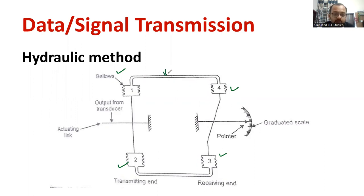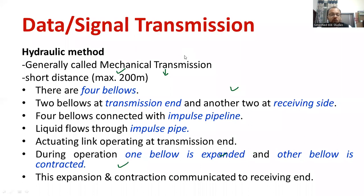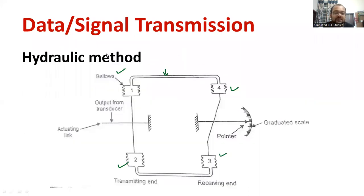Moreover, you can observe very clearly each bellows have been connected to each other. This is a connecting link. What you call this connecting link? The connecting link of bellows are known as impulse pipe. We call it as impulse pipe. So, this is your impulse pipe.